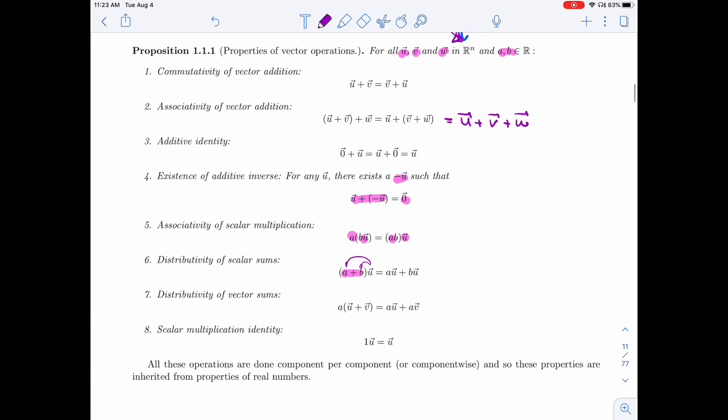And the same thing for if the sum is in vectors, I can distribute a scalar number over a sum of vectors and get AU plus AV. And then finally, if I multiply any vector by one, I get that vector back.